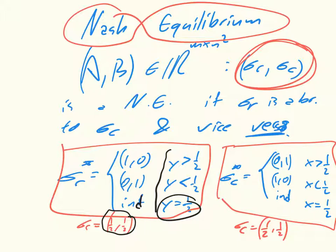The row player has no reason to move. And similarly, if I come down here and I look at, well, if x is now equal to a half, I look here, and the column player also has no reason to move. So at this point, at this collection of strategies, neither strategy has a reason to move.